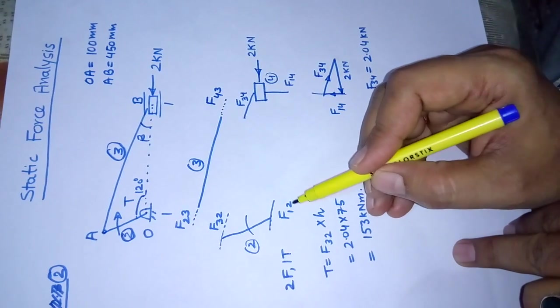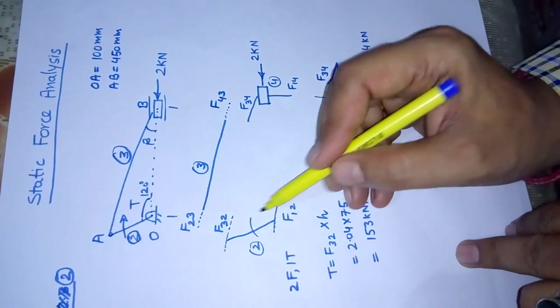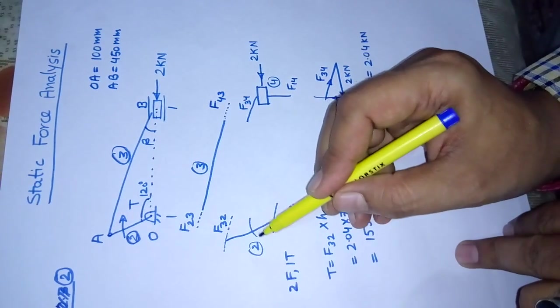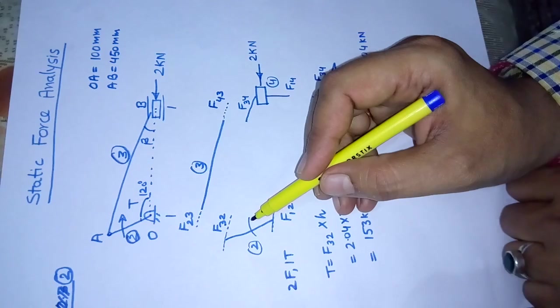One force comes on link 2 because of link 3, and one force comes on link 2 because of link 1. They are going to make a parallel force system or a couple that will be balanced by application of a torque.